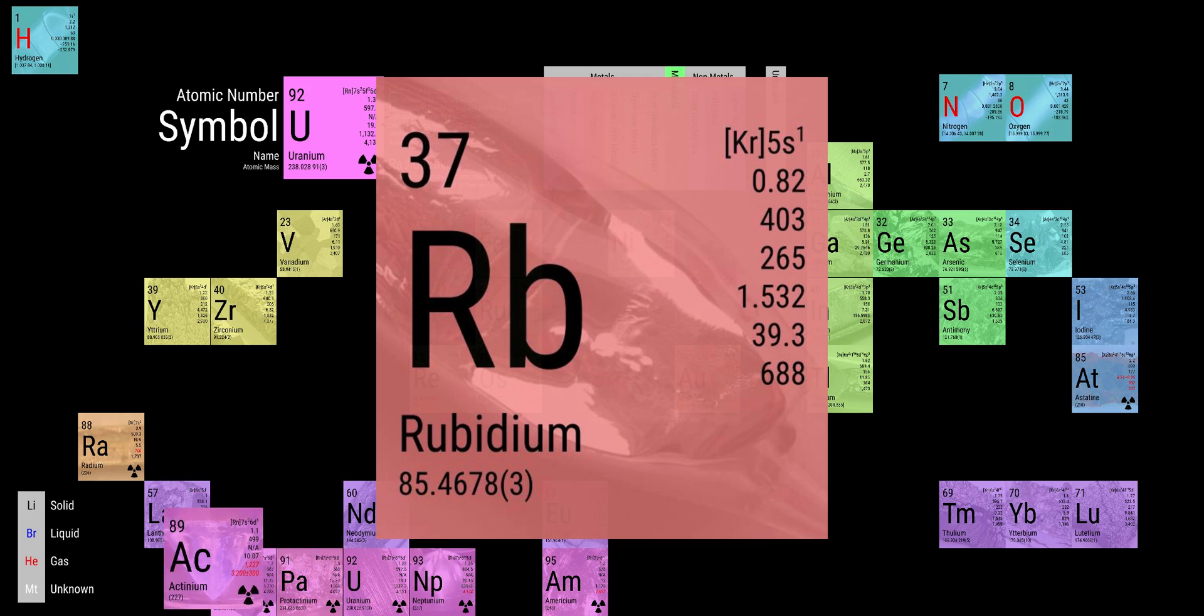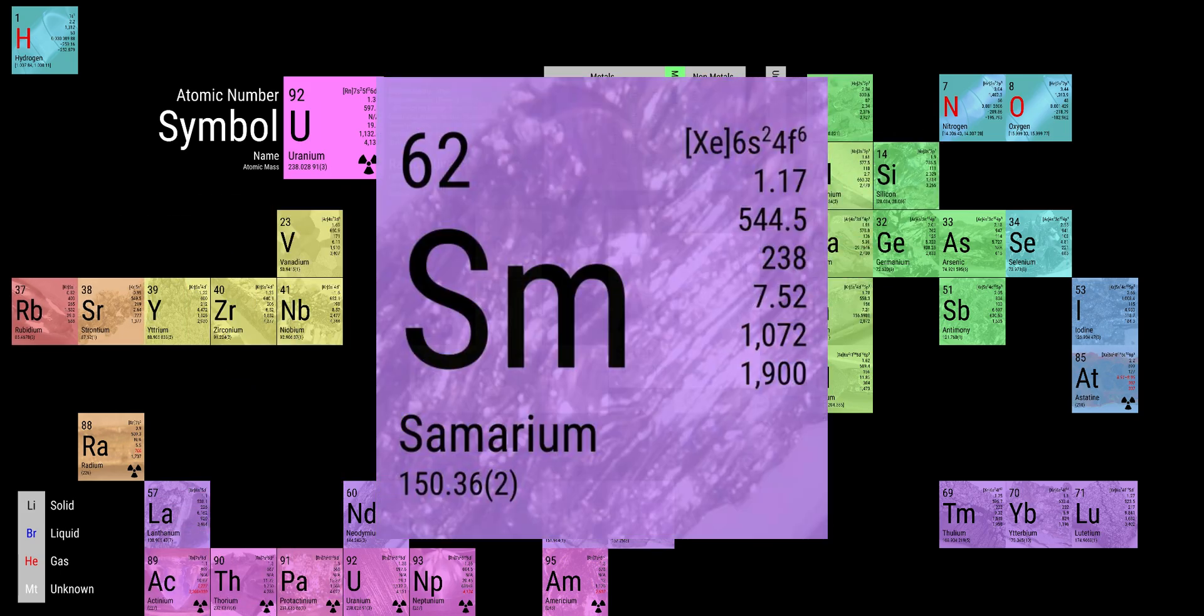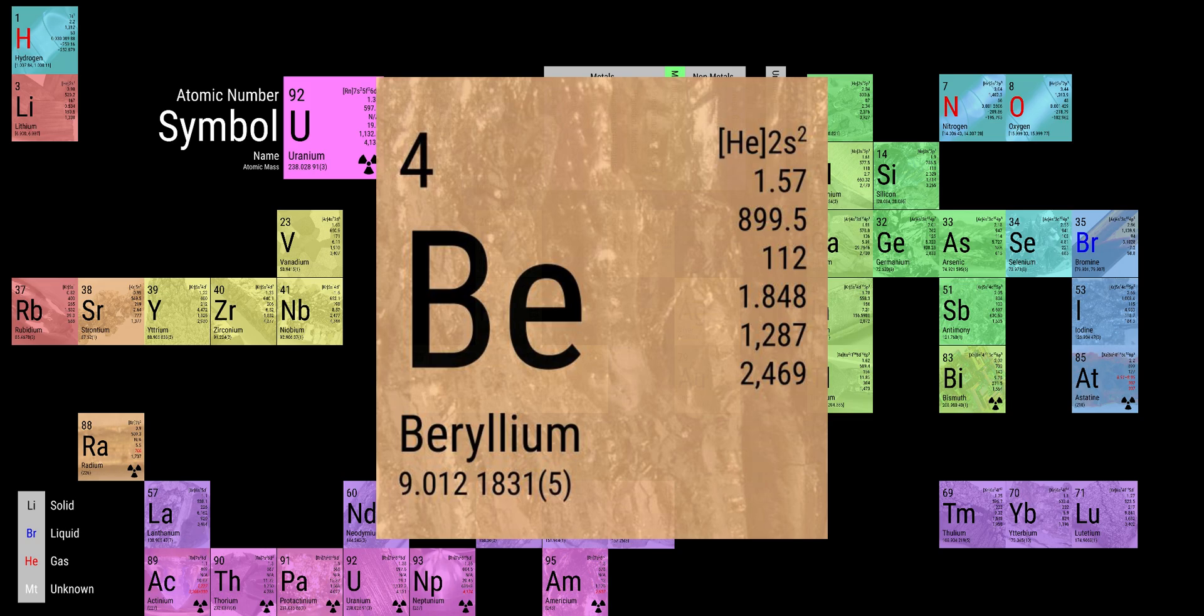There's yttrium, ytterbium, actinium, rubidium, and boron, gadolinium, niobium, iridium, and strontium, and silicon, and silver, and samarium, and bismuth, and lithium, beryllium, and barium.